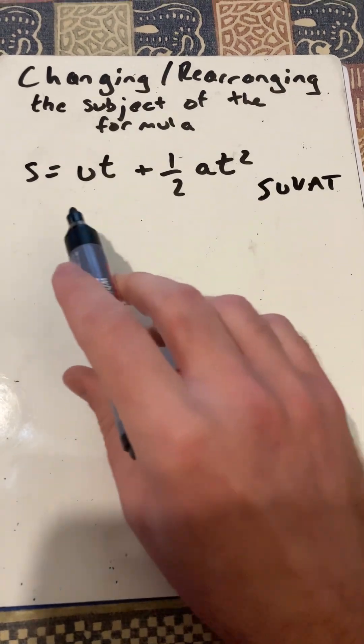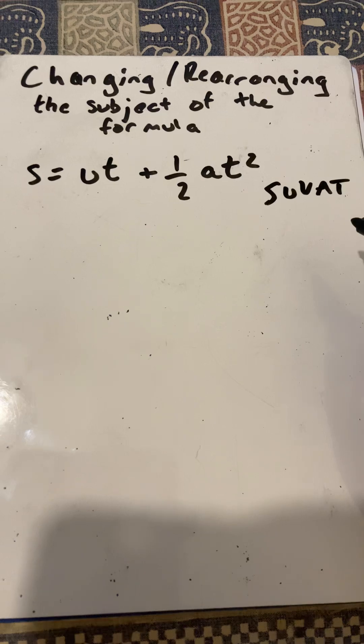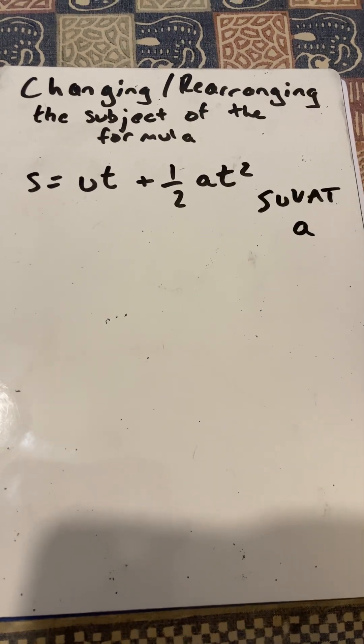So say we have S equal to UT plus a half AT squared, and we want to make A, the acceleration, the subject of the formula.